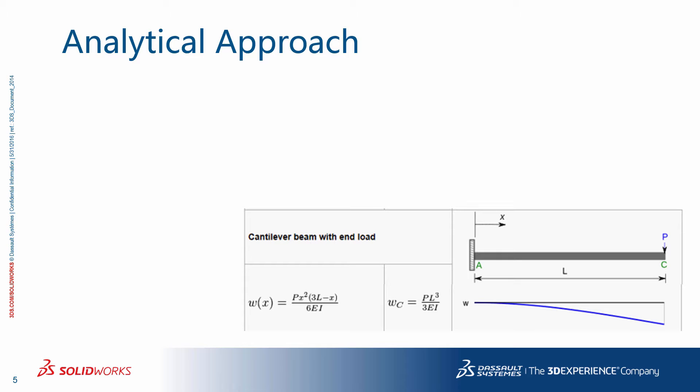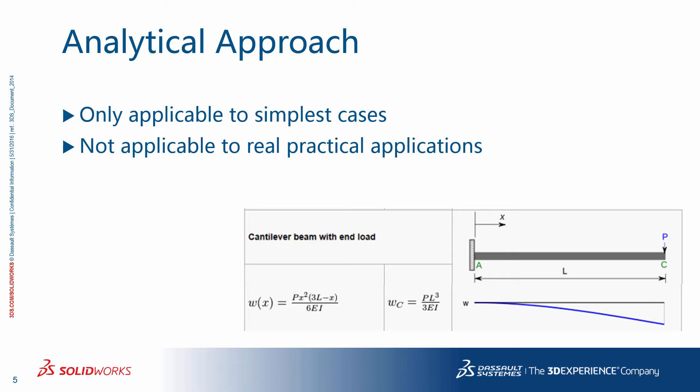For a given cantilever beam of length L, elastic modulus E, cross-sectional moment of inertia I, fixed on one side and subjected to an end force P at the other end, the resulting small deflection due to bending can be found to be PL cubed divided by 3EI. The problem with analytical approaches is that they are only applicable to the simplest of cases and are not possible for real-world applications.